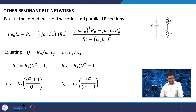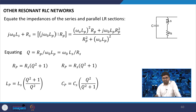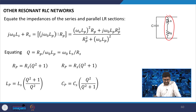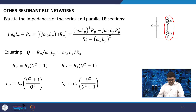For other resonant RLC circuits — if you want to do impedance transformation, converting a series resonant circuit with series L and Rs into a parallel representation — how does the relation change?